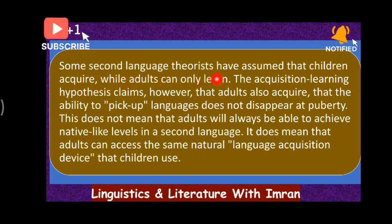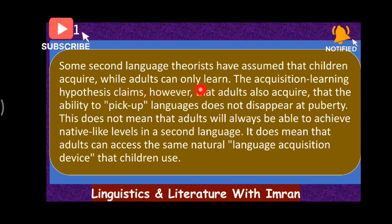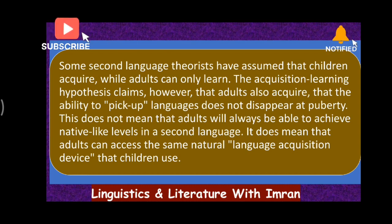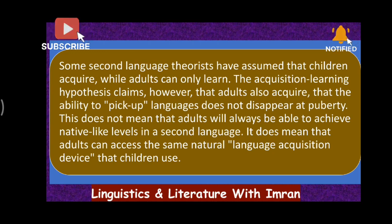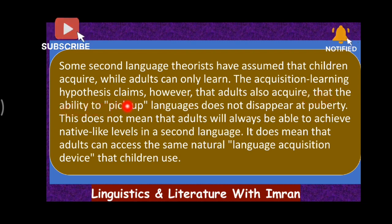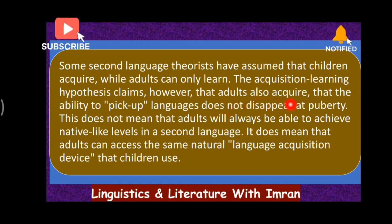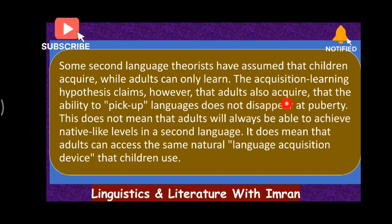Some second language theorists have assumed that children acquire while adults can only learn — that children acquire while adults do not acquire a language, they learn a language. But Stephen Krashen does not agree with them. He thinks that adults can also acquire a language the way a child acquires. The acquisition-learning hypothesis claims, however, that adults also acquire — as children acquire their first language, adults can also acquire a second language.